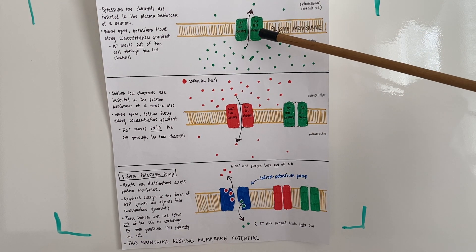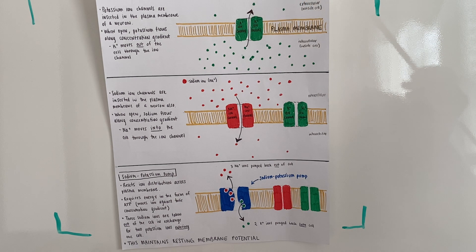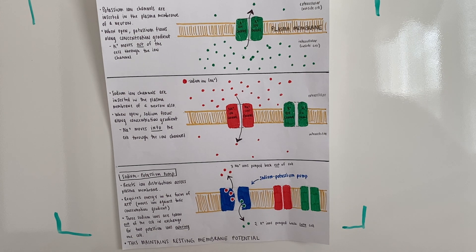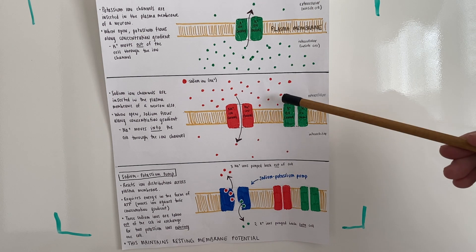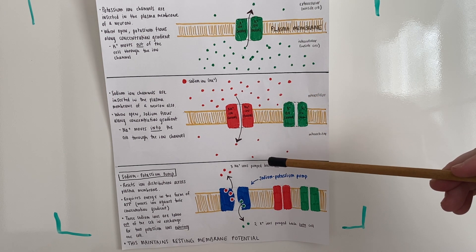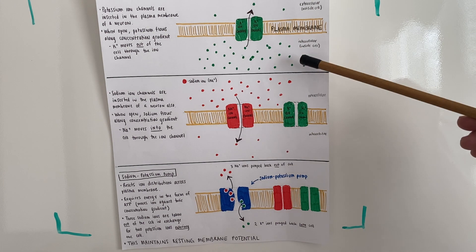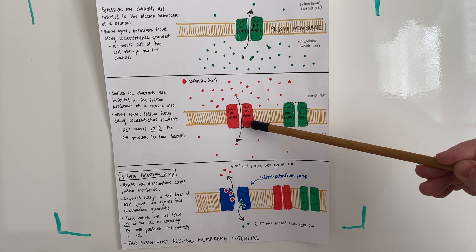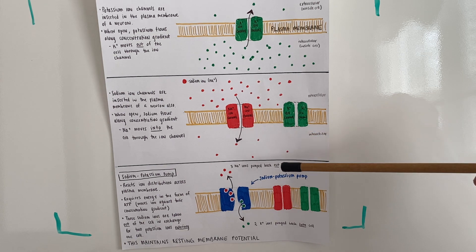The movement of these positively charged potassium ions out of the cell is going to decrease the resting membrane potential — if you lose positively charged ions, the interior of the cell will become more negative, bringing it away from the resting membrane potential. However, if you have the movement of sodium ions into the cell, that can help bring it back towards negative 70, but then you have an incorrect distribution of ions across the plasma membrane.